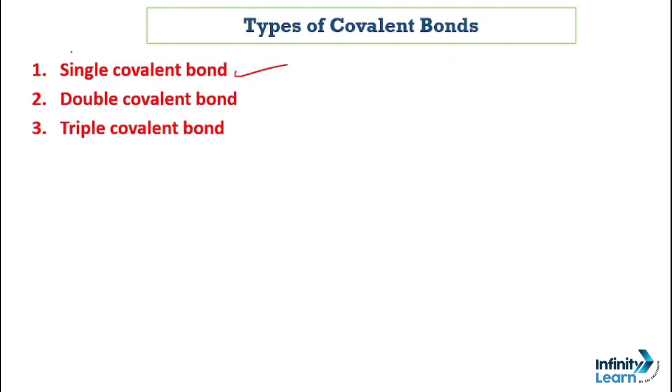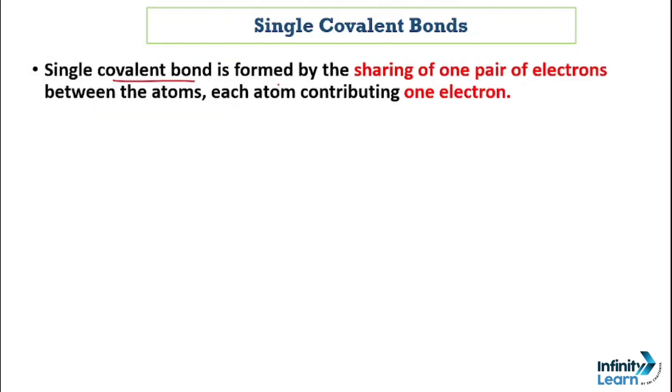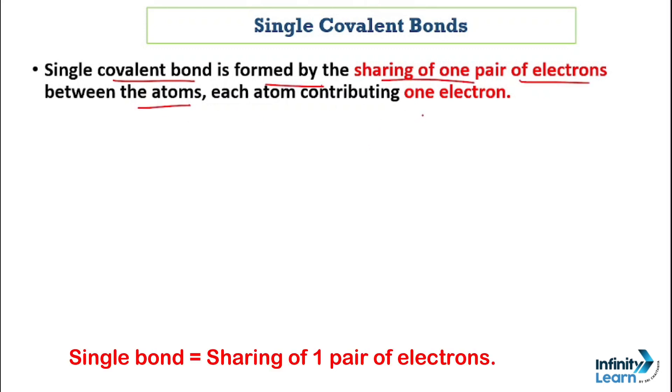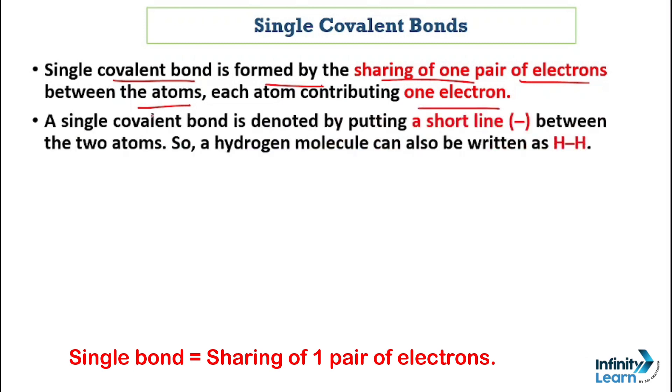So first let's talk about what is single covalent bond. Single covalent bond is formed by the sharing of one pair of electrons between the atoms. Both atoms contribute one electron from their side. Single covalent bond can be shown by a short line between the two atoms. Here you can see, in hydrogen, between them you can see one short line, so this shows it is a single covalent bond.